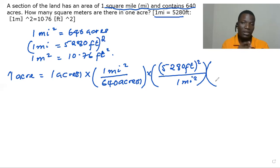And the last conversion factor that we're going to use is the one which gives us square meters. So we have one square meter being equal to 10.76 square feet. So that's our conversion factor.